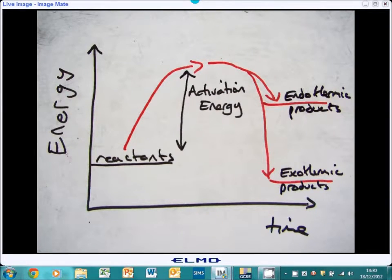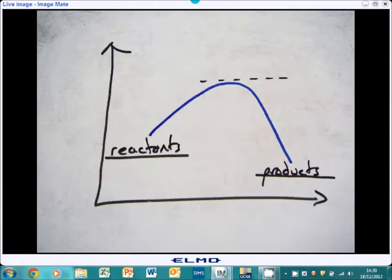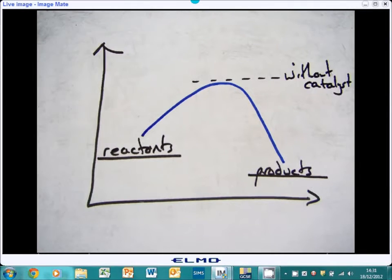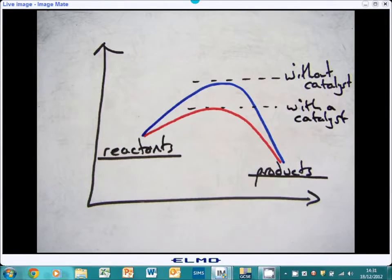What a catalyst does is it lowers that activation energy, the energy required for a reaction to occur. So this is the energy required without a catalyst. And the red line is the energy required with a catalyst. So if there is less energy required, the collisions are more successful. So it will mean even some of the collisions that hit each other with less energy will still react to form our products.